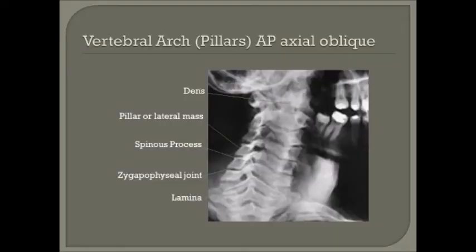Here's the alternate oblique projection. If the patient is rotated correctly, we'll be able to visualize the articular processes of C2 through T1. And we'll be able to see the dens, lamina, and pillars of the cervical vertebra, and we're going to do both sides for comparison.